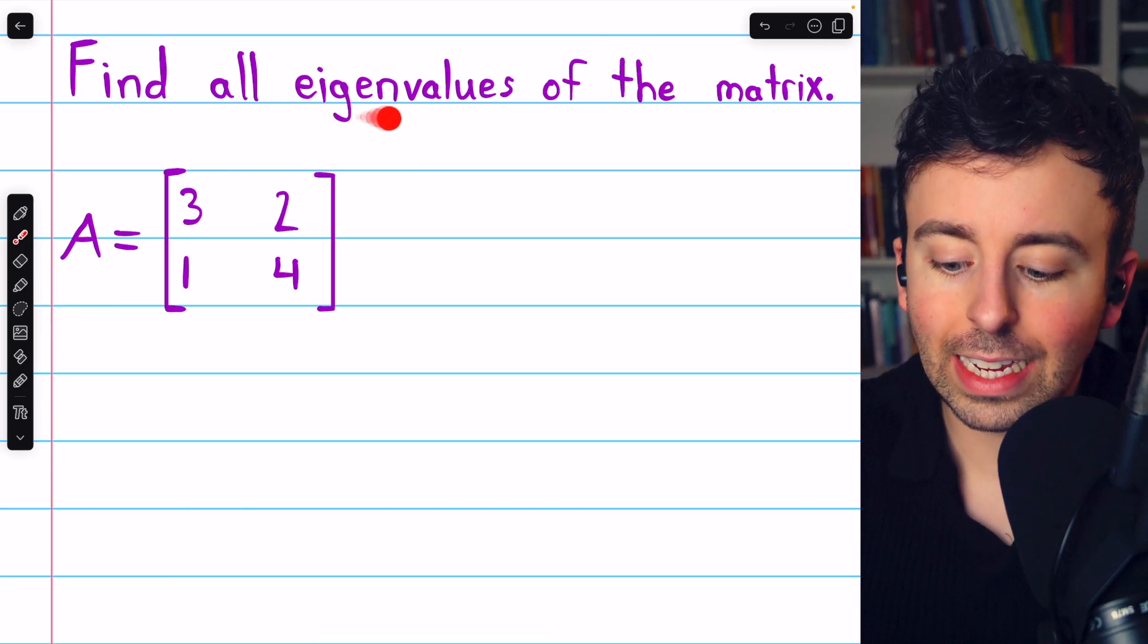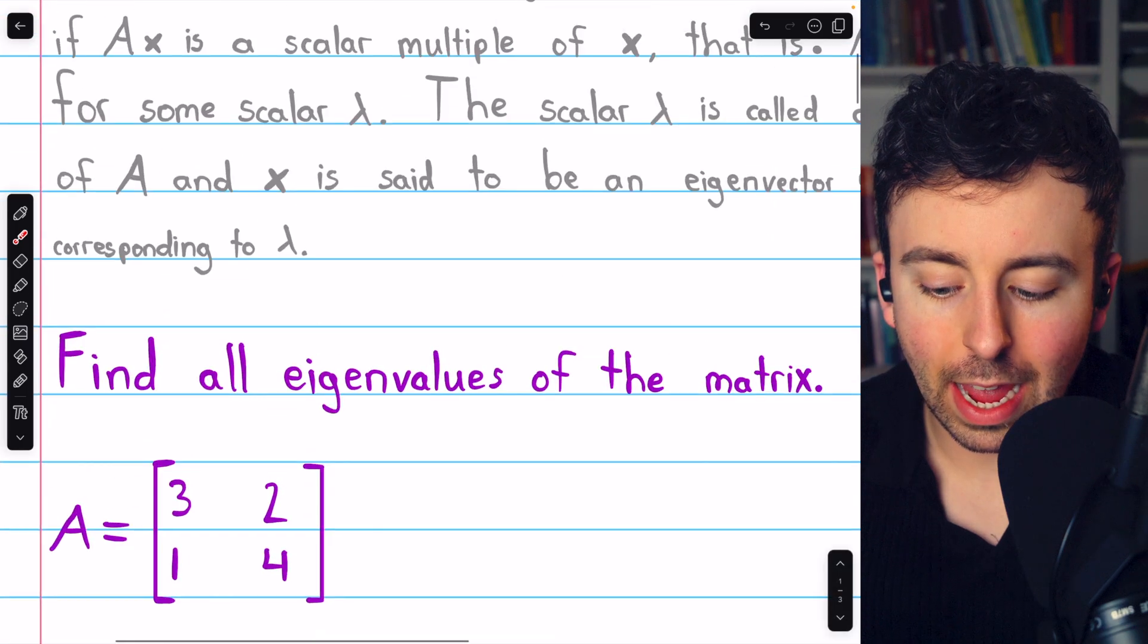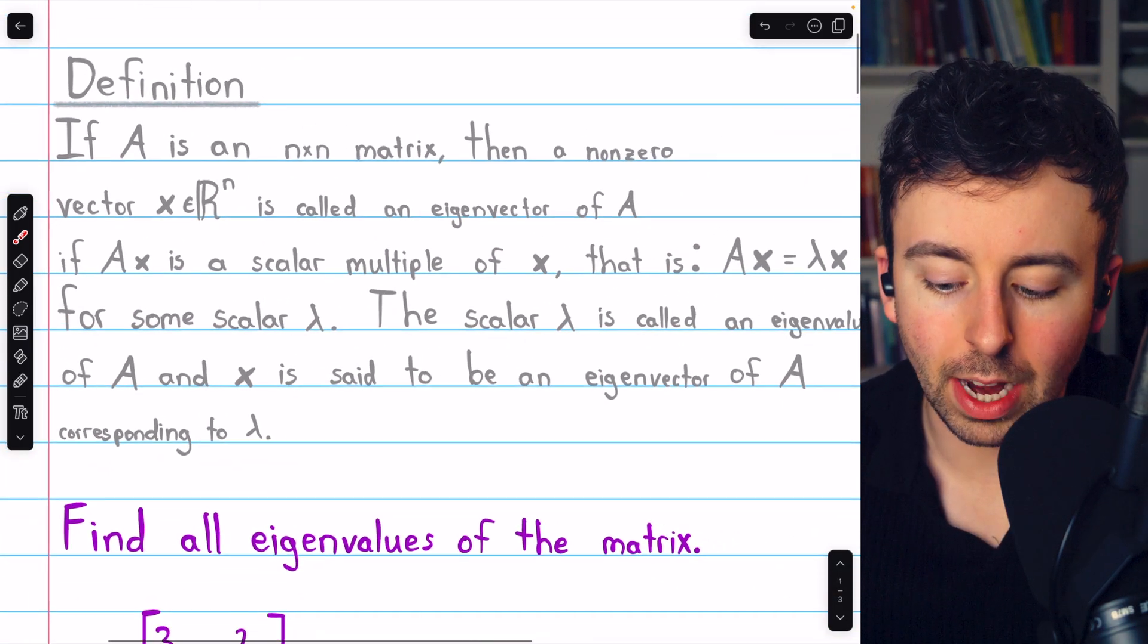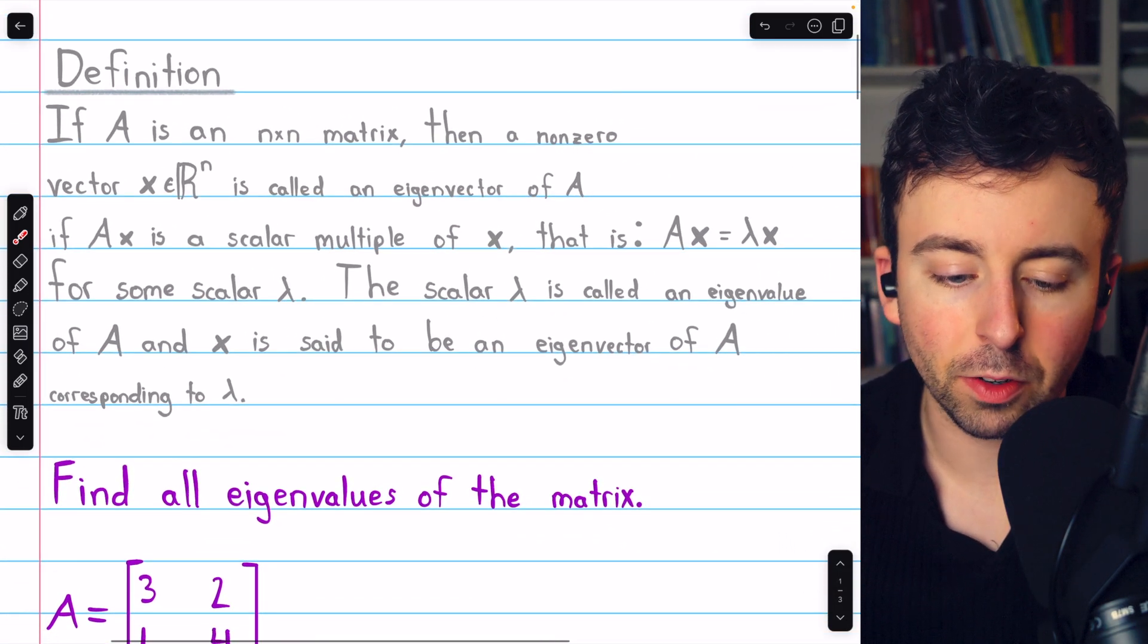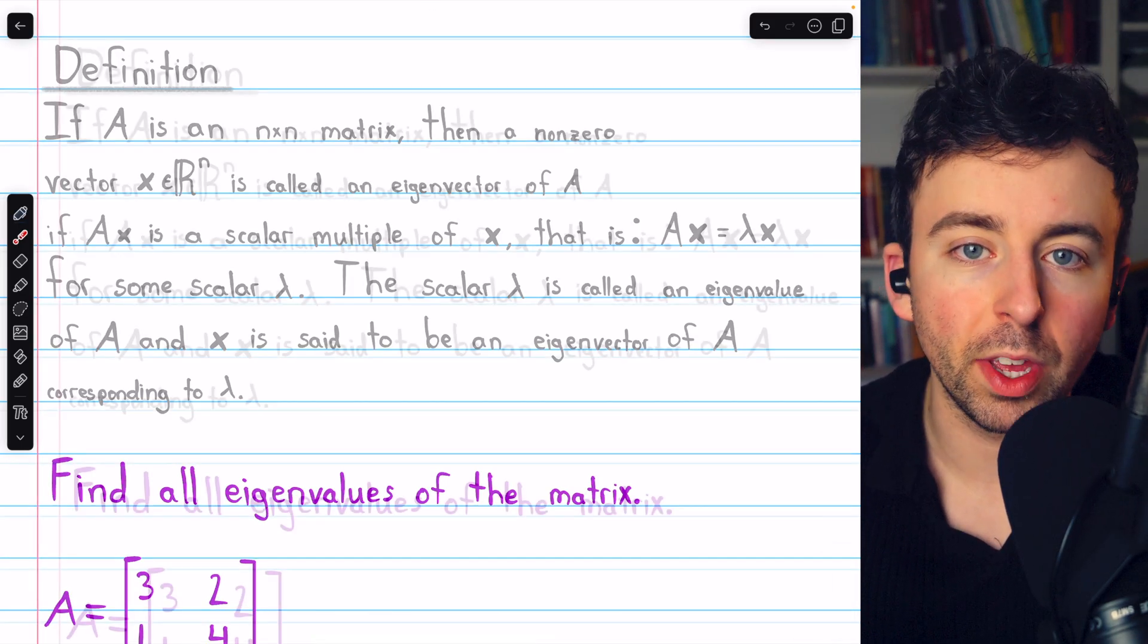Let's go over how to find all eigenvalues of this 2x2 matrix. Here's a quick recap of the definition of an eigenvalue and an eigenvector. I'll leave a link in the description to the lesson where we introduce these things if you need a more thorough review.